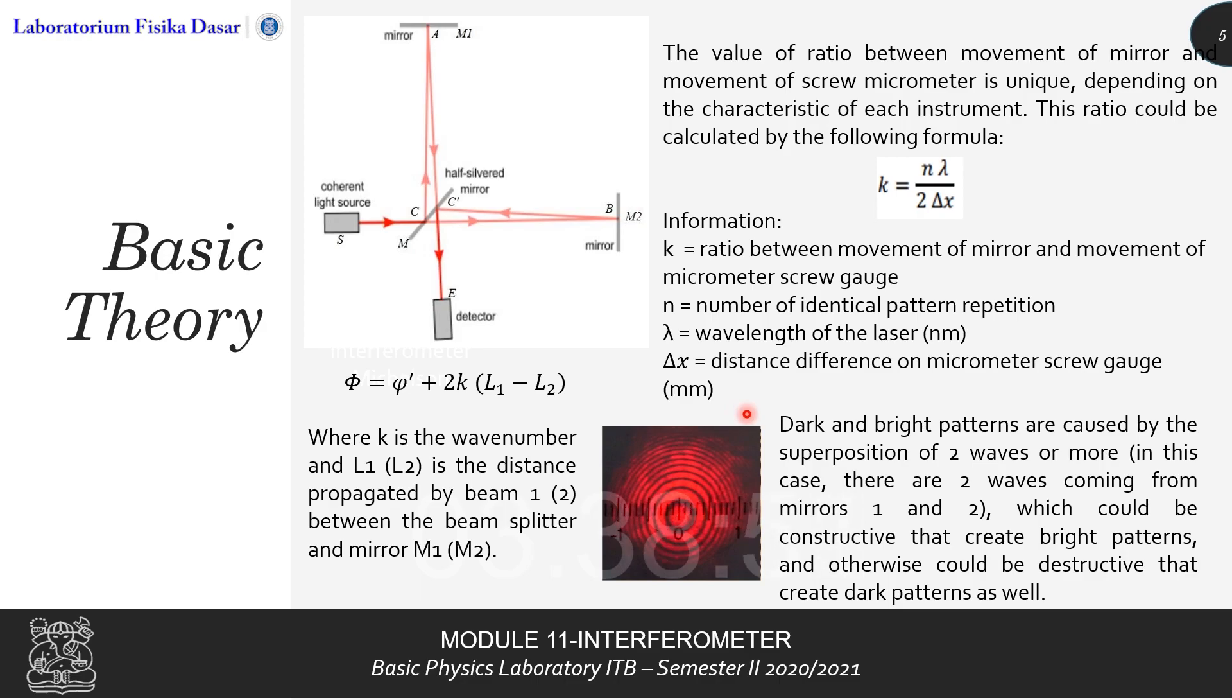The dark and bright patterns are caused by the superposition of two waves or more. However, in this case, or in this experiment, there are only two waves, which could be constructive that create bright patterns. However, some other times, it could be destructive that create dark patterns, which explains the pattern shown in the picture.